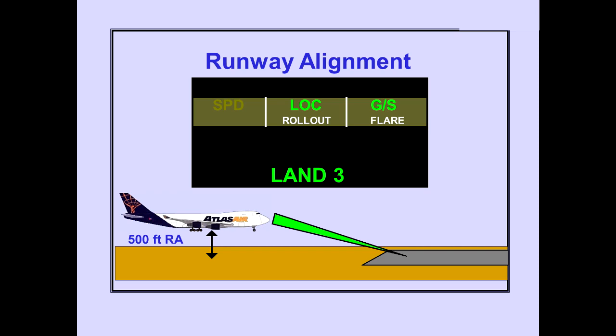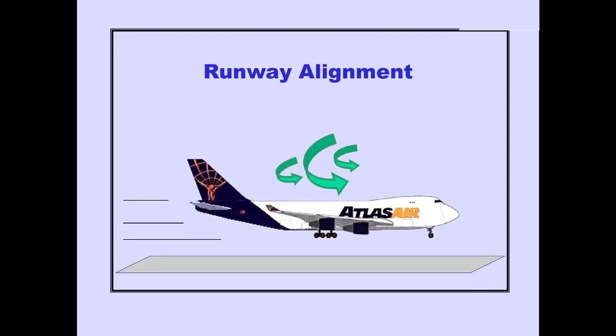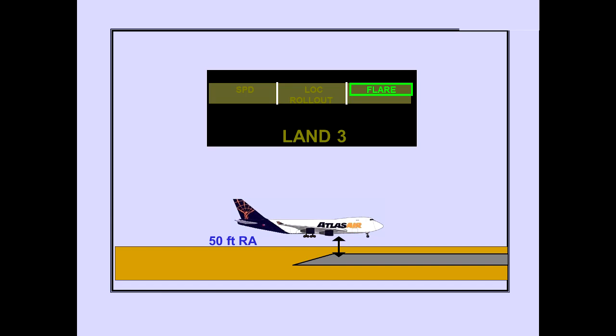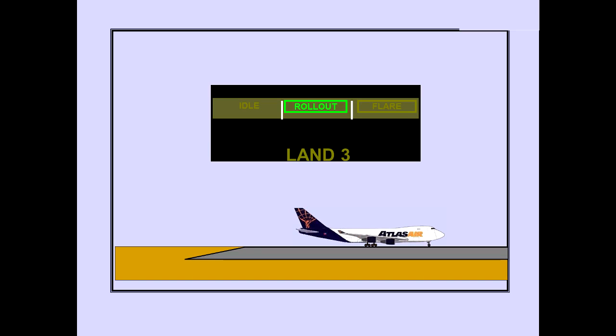At 500 feet radio altitude with localizer and glide slope captured, the autopilot begins runway alignment; no annunciation occurs on the PFD. If a crosswind exists, the autopilot applies rudder to remove part of the crab angle and establishes a slight slip. At approximately 50 feet radio altitude, depending on airplane closure rate with the ground, the autopilots begin the flare. As the flare starts, the PFDs display flare engaged. Slightly before touchdown, the PFDs show rollout mode engagement, and the autopilots control the rudder and nose wheel steering for touchdown and landing rollout guidance.